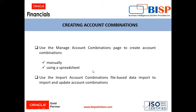We can create the combination manually or through spreadsheets, and we can use the file-based data import worksheets to import the account combination. This is done by generating a CSV file and then uploading it in the Oracle Fusion Applications. Today we'll use the Manage Account Combination option to create combinations manually and through the spreadsheet.